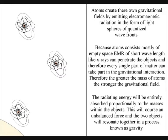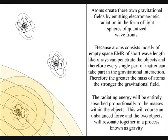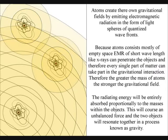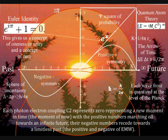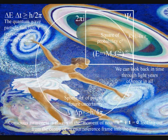Because atoms consist mostly of empty space, electromagnetic radiation of short wavelengths, like X-rays, can penetrate the objects, and therefore every single part of matter can take part in the gravitational interaction. The gravitational field will propagate at the same speed that electromagnetic radiation moves, the speed of light, therefore there is no instantaneous action at a distance.